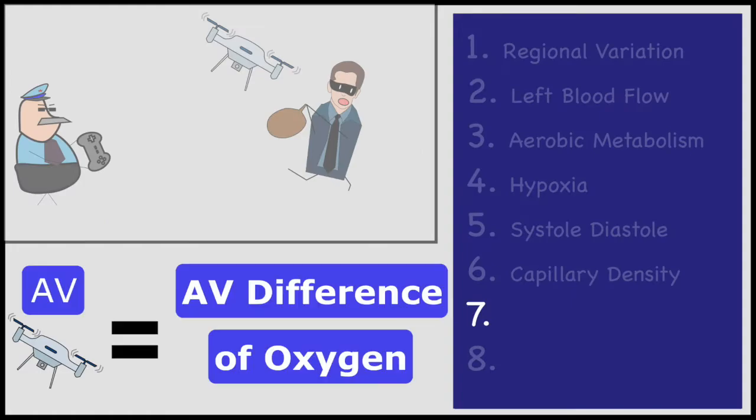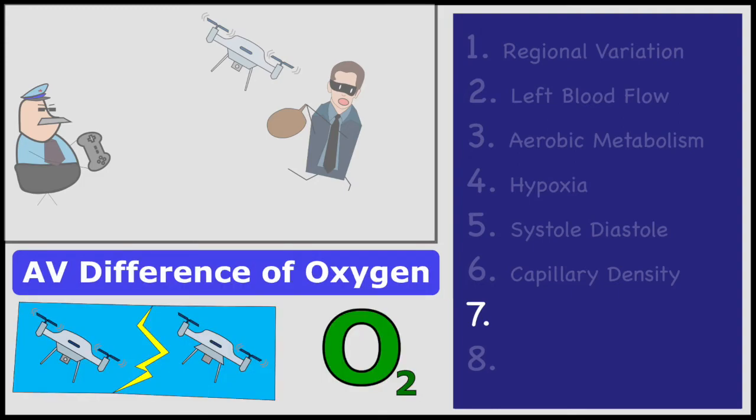The aerial vehicle, or AV, reminds us of AV difference of oxygen, or arteriovenous difference of oxygen. The resting arteriovenous difference of oxygen content is very high. It is about 13 milliliters for every 100 milliliters.